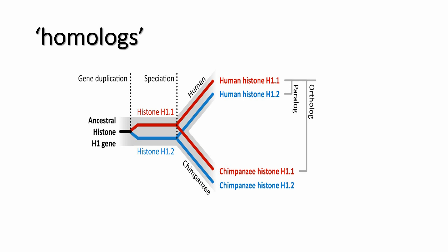For example, the histone H1 gene: after gene duplication we have two copies, two variants like H1.1 and H1.2. After speciation, humans have two different copies and chimpanzees have their two different copies. Orthologues are genes in different species that evolve from a common ancestral gene by speciation. In general, orthologues retain the same function during the course of evolution. In the same species, two different copies of the same gene are called paralogues.